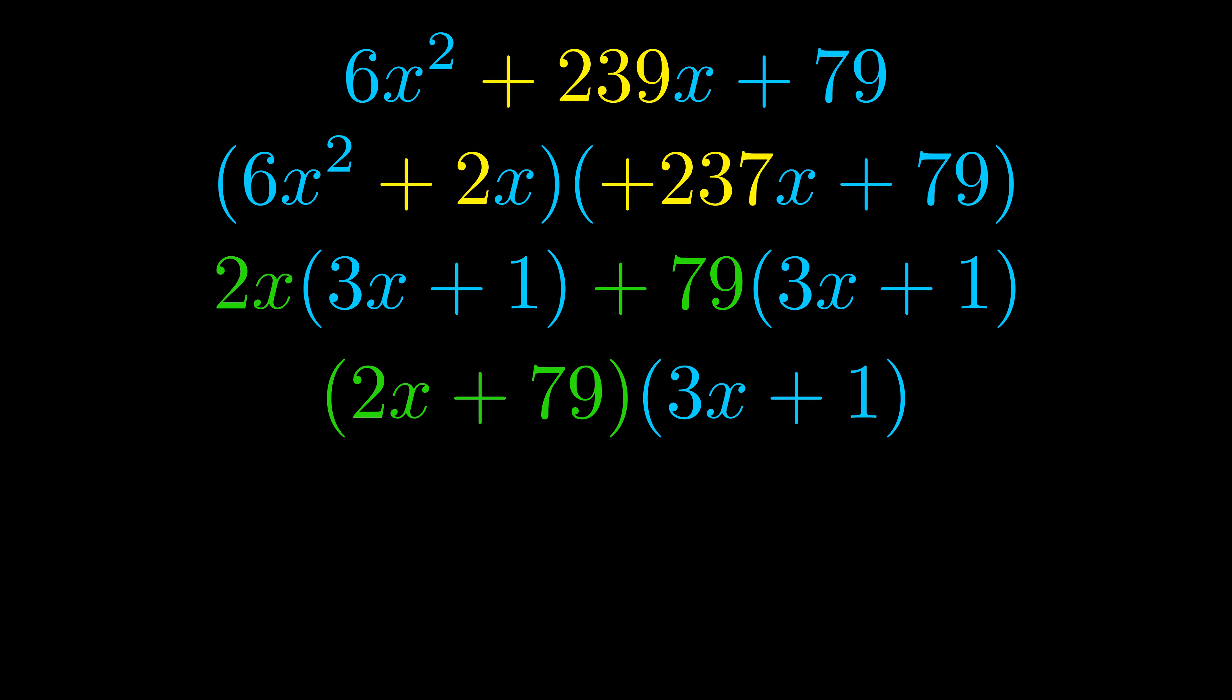Those blue values will become one of our factors and we will combine the two green values, the GCFs that we pulled out to get the other one. And that is our fully factored equation.